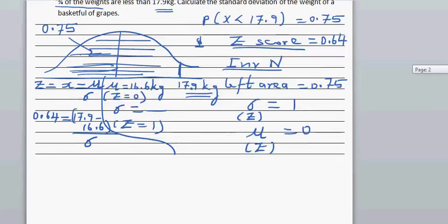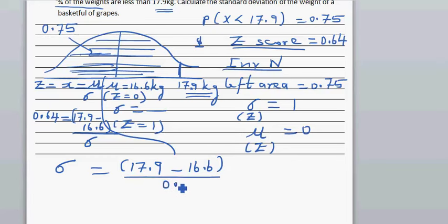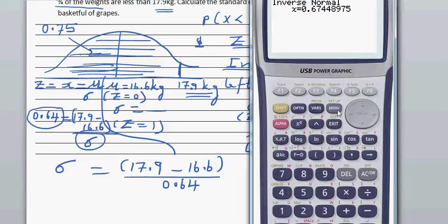Divided by standard deviation, which we want to find. Standard deviation is going to be 17.9 minus 16.6 divided by 0.64. I have swapped this across by multiplying. Let's go to the run menu: 17.9 minus 16.6 divided by 0.64. Enter.